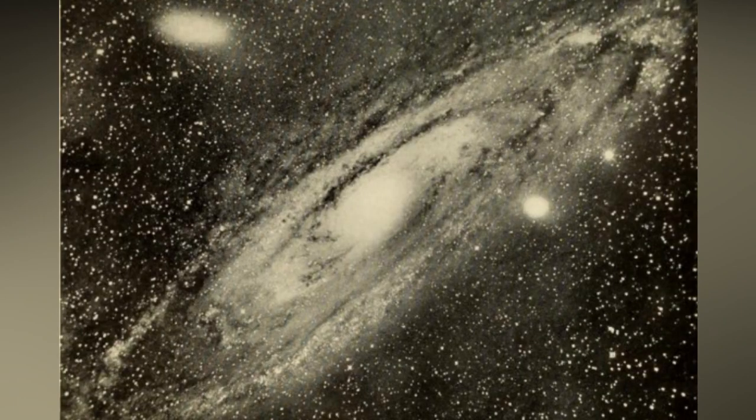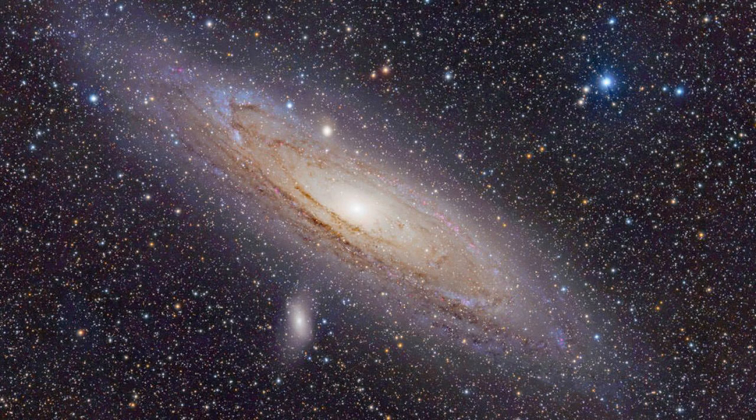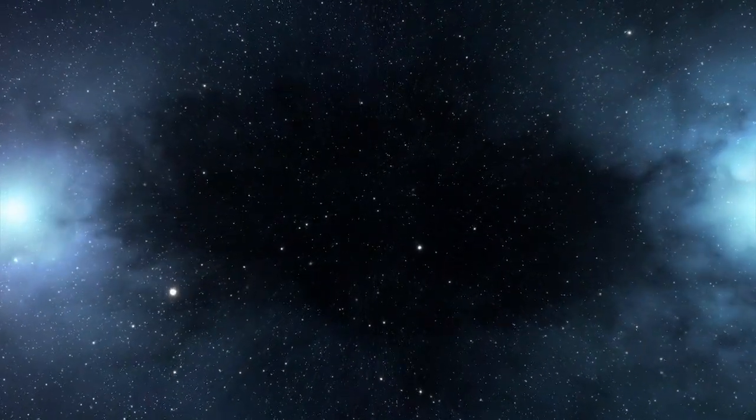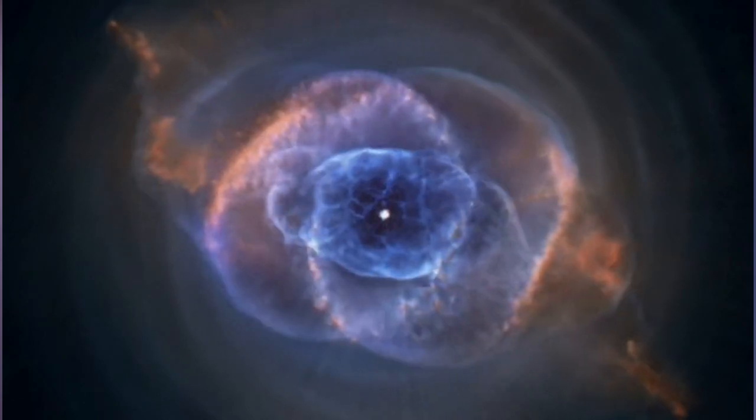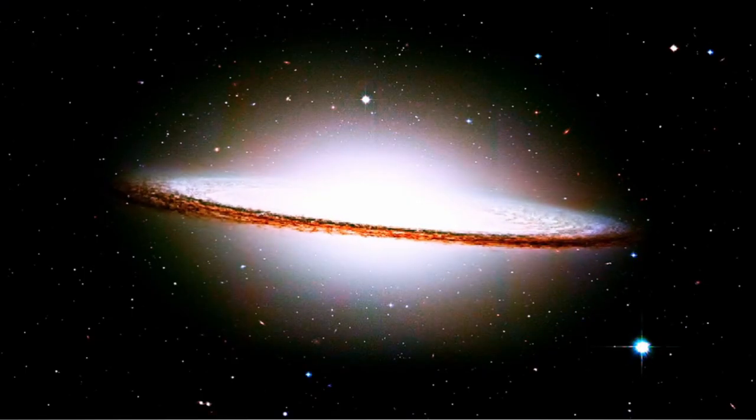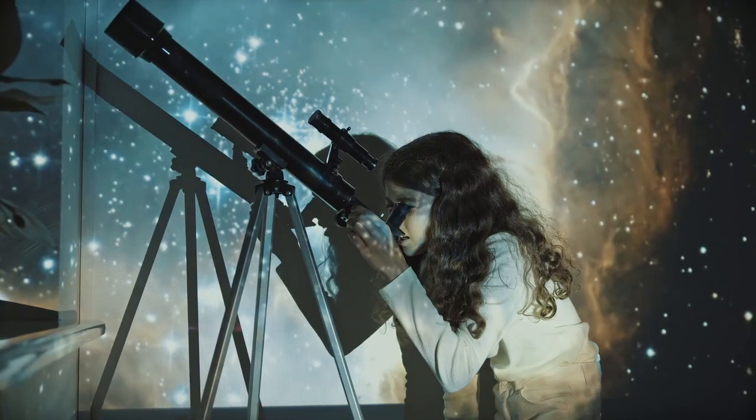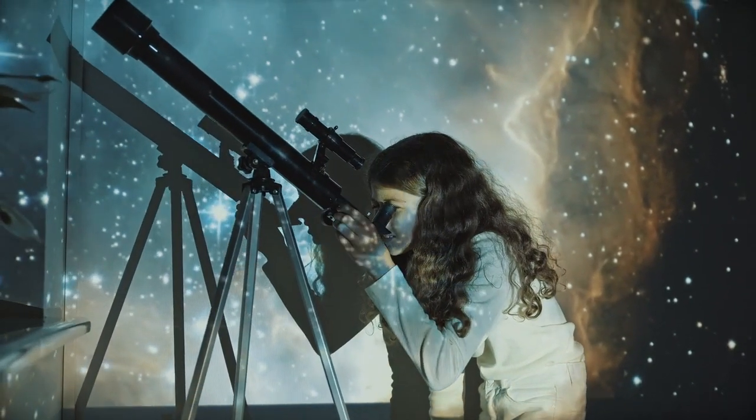That distance placed Andromeda, one of the brightest and presumably closest of the spiral nebulae, vastly outside the bounds of the Milky Way. In principle, the great debate was settled then and there. Spiral nebulae were other galaxies, and our Milky Way was just one outpost within a staggeringly vast universe. And yet, still the story is far from over.